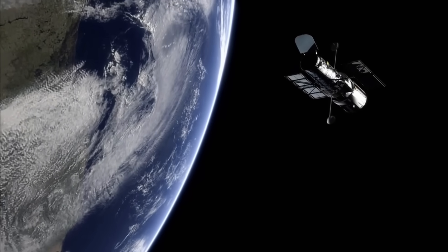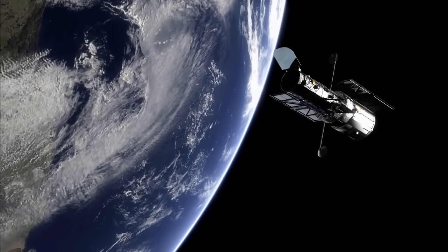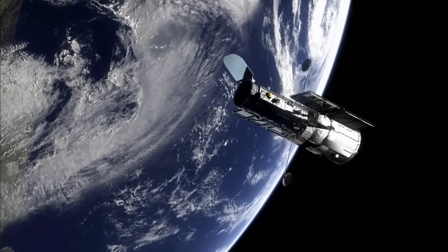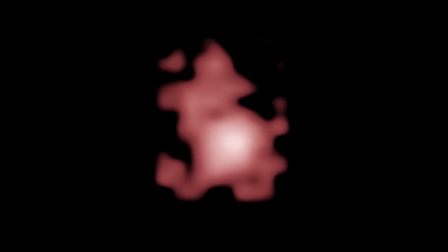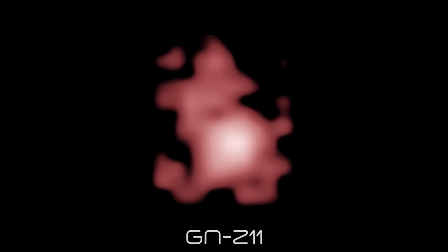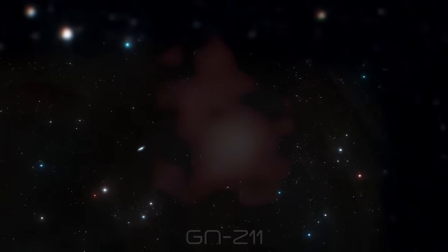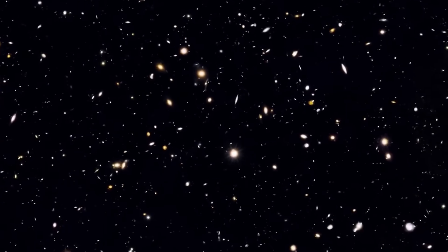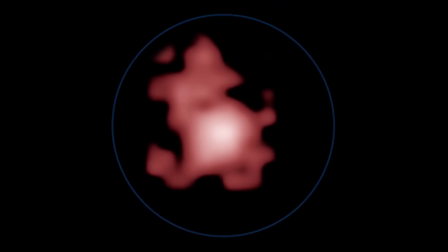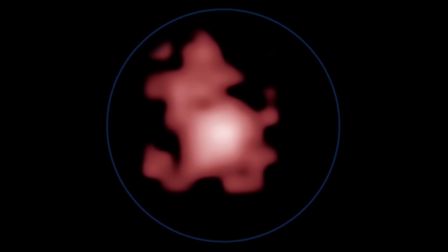One of the main goals of the Hubble telescope was to find the most distant galaxy in the known universe. It achieved this in 2016, when it discovered galaxy GN-Z11. This galaxy is located 32 billion light years away, and the light we see from it shows the galaxy as it was 13.4 billion years ago.